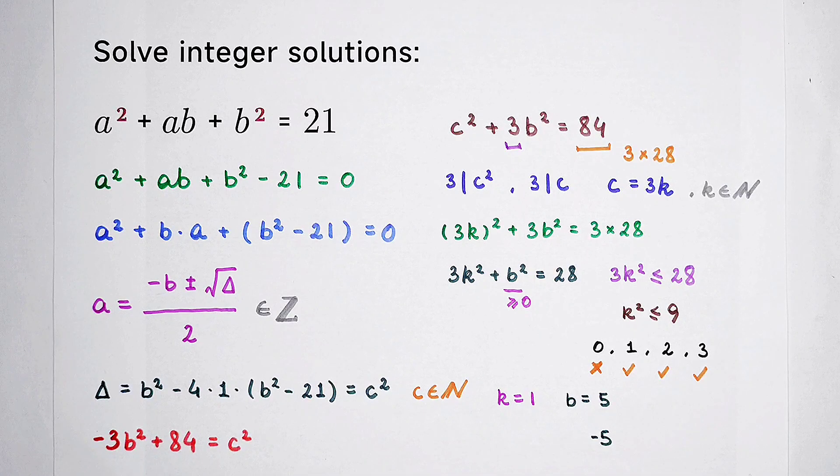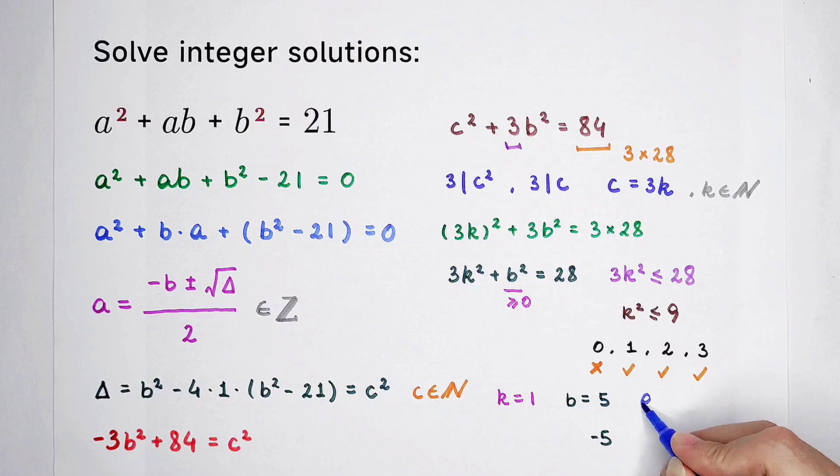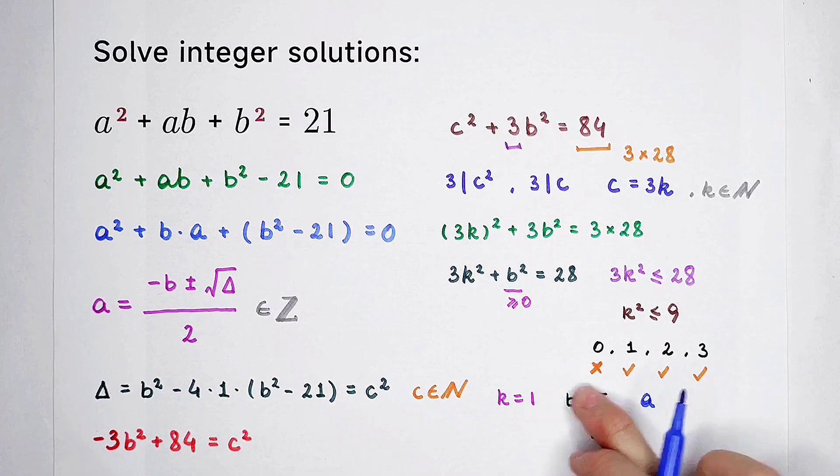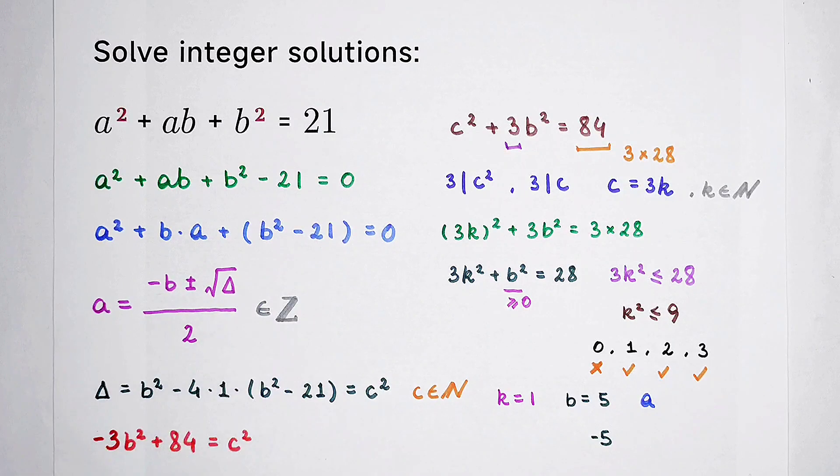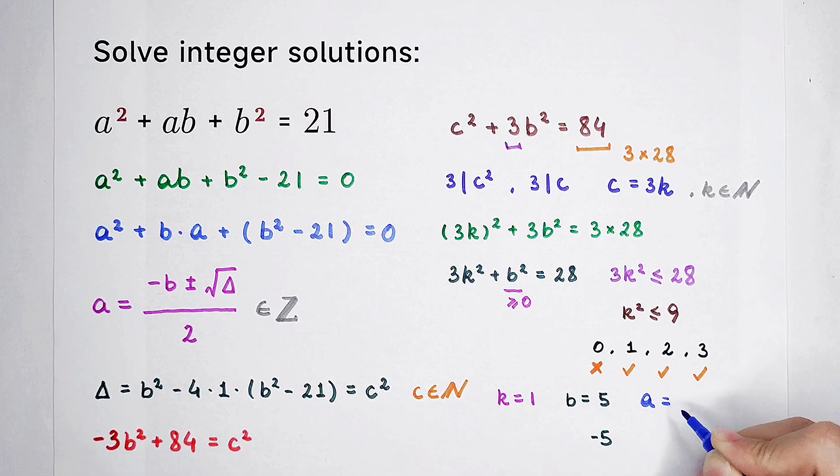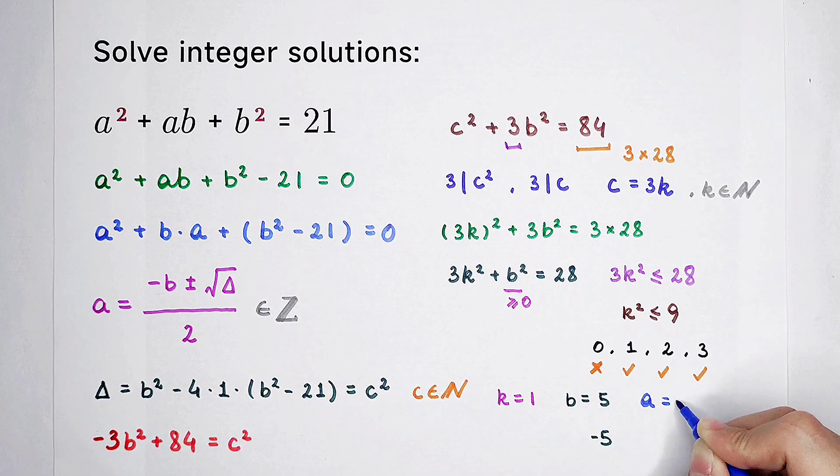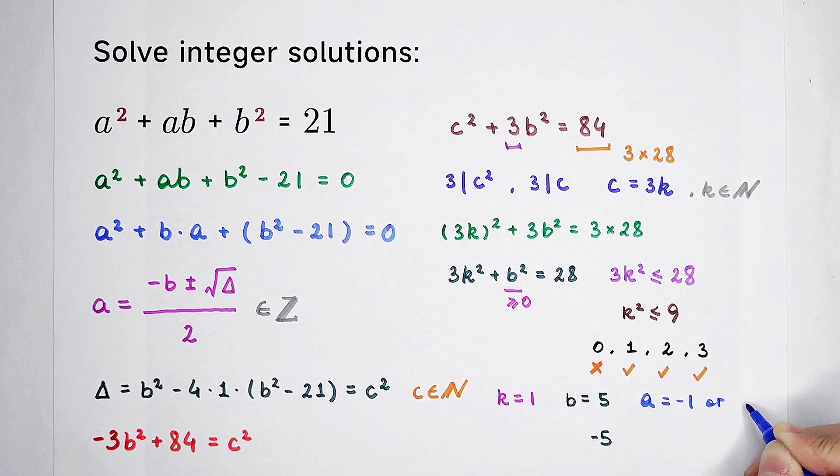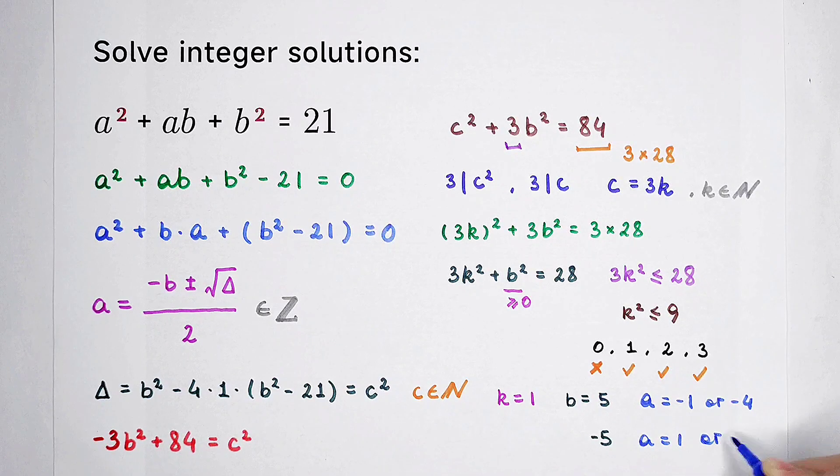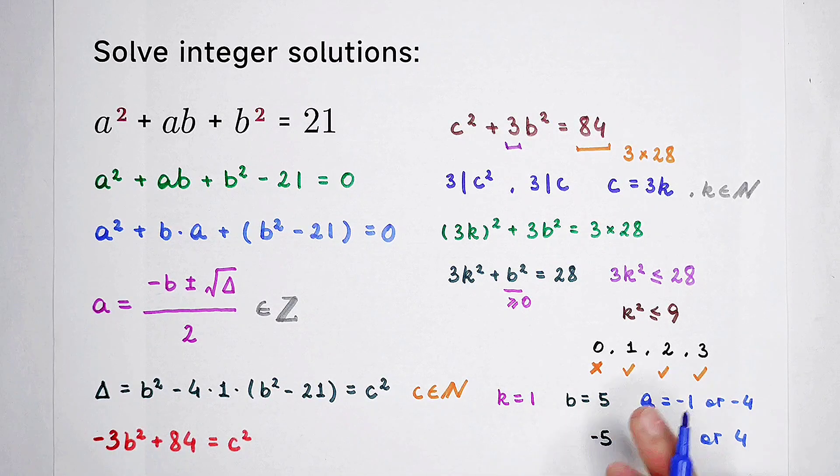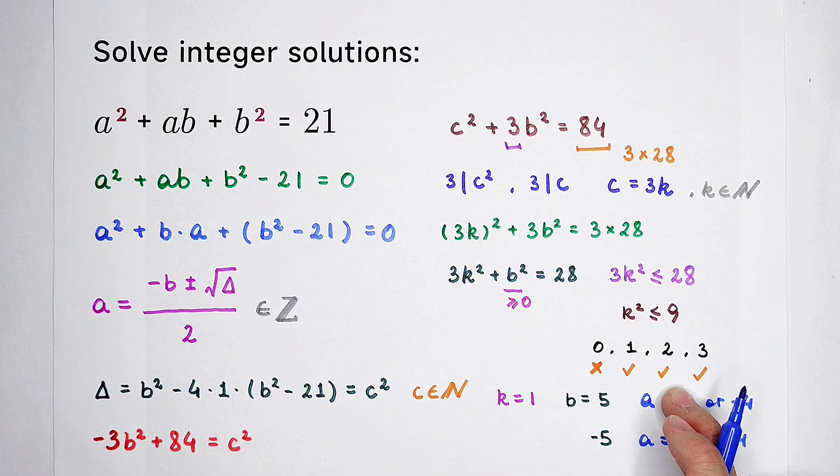And a, what about a? In this case, take it here. Substitute it into this term. Or into our original term. That's also okay. You can find out that a is equal to negative 1 or negative 4. And for b is equal to negative 5, a is equal to 1 or 4. So this is the case where k is equal to 1. And for k is equal to 2 and 3, do it yourself.